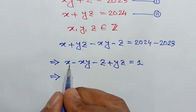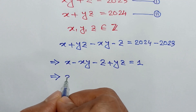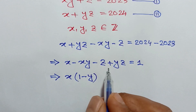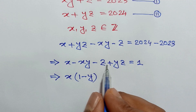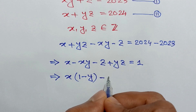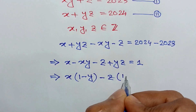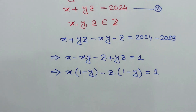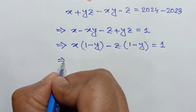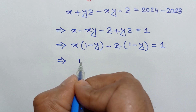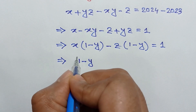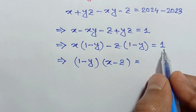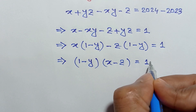Taking common x from the first two terms, we can write x times (1 minus y), and taking common negative z from the last two terms, we have negative z times (1 minus y) is equal to 1. Then taking common (1 minus y), we have (1 minus y)(x minus z) is equal to 1.